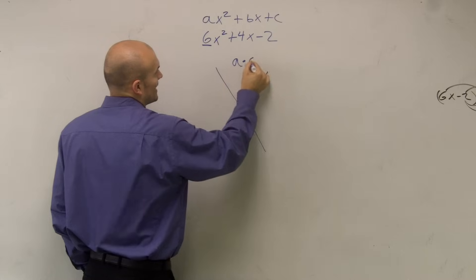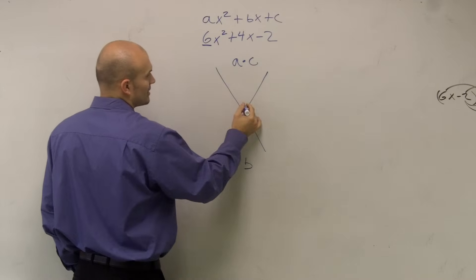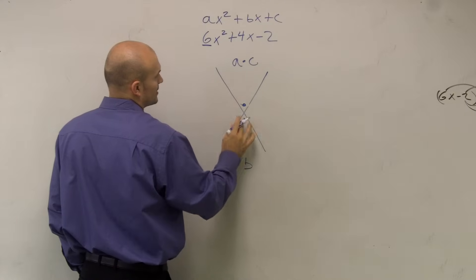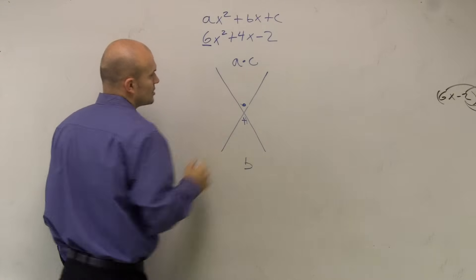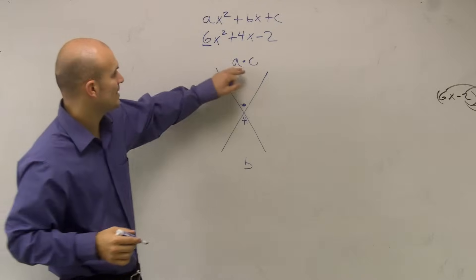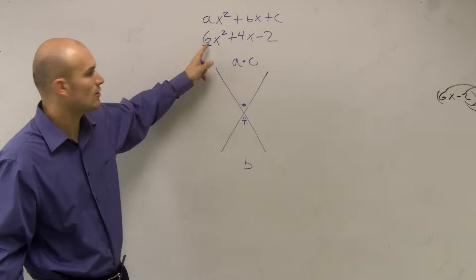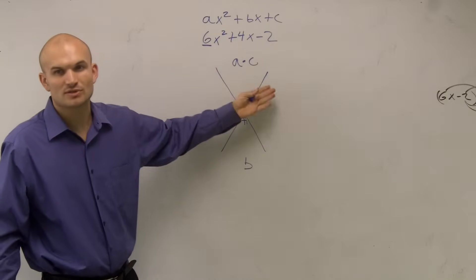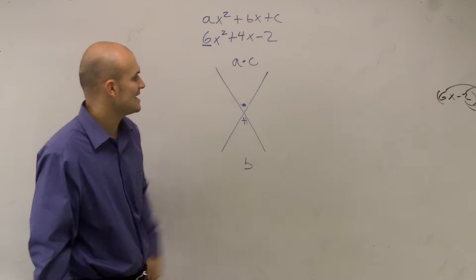And up top what I'm going to do is I'm going to write a times c, and then bottom I'm going to write b. And I'm going to write the multiplication up here and the dot here. So before we usually just wrote c, but when that was the case, the reason why is because a always equals 1. So 1 times c was always just equal to c, so we kept it in. Now we have a times c.